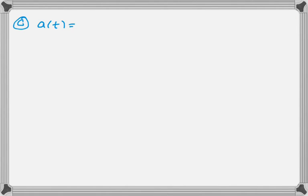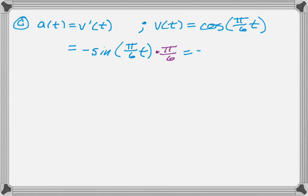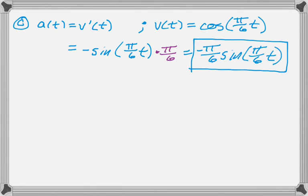The next question is to find a function for the acceleration. We know acceleration is the derivative of velocity, so let me jot down what velocity is so I can take the derivative. The derivative of cosine is negative sine of that thing, times the derivative of that thing. I'll write this a little nicer and box that answer.